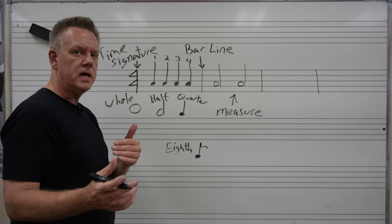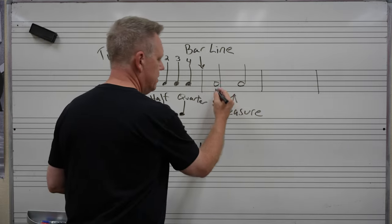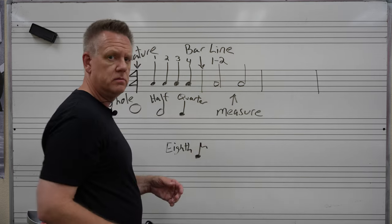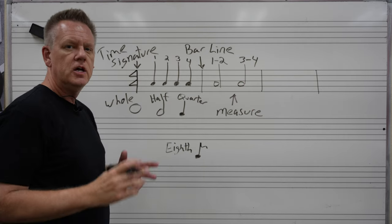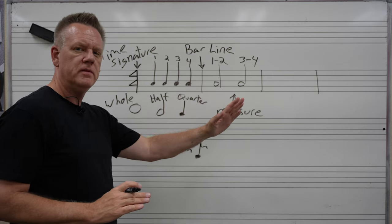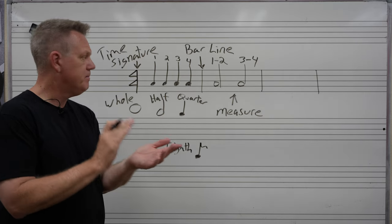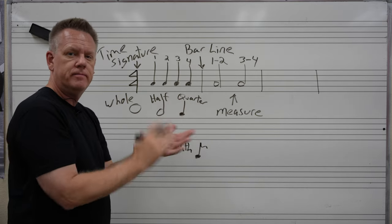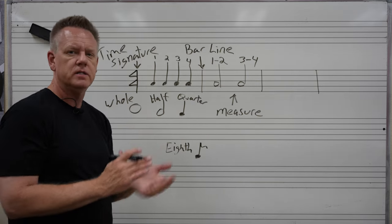Those two half notes equal the same amount of time right here. Now, how would we count something like that? Well, we already counted this real easy: one, two, three, four. Over here, same amount of time, same beat count, but the rhythm is different. This will take up, this note right here will take up beats one and two, and this one will take up beats three and four. So, as time goes on, I will clap the beat, but I will count what's on the board.